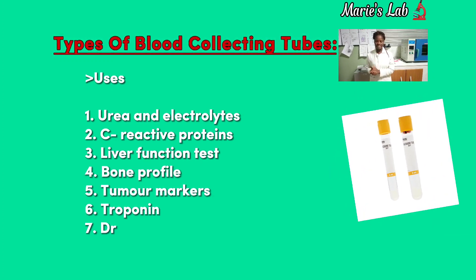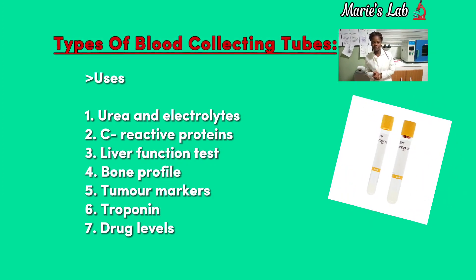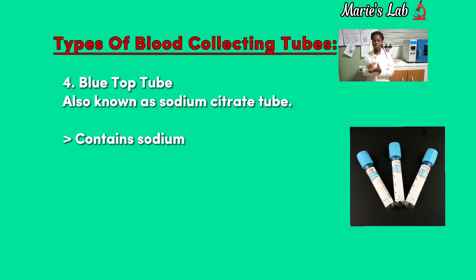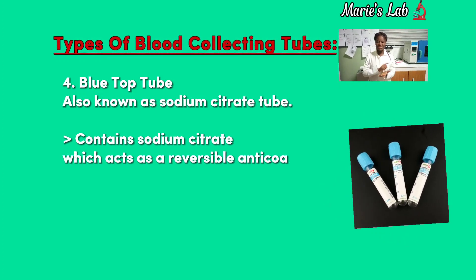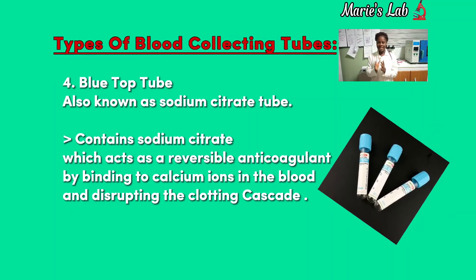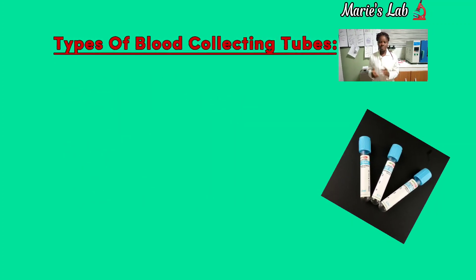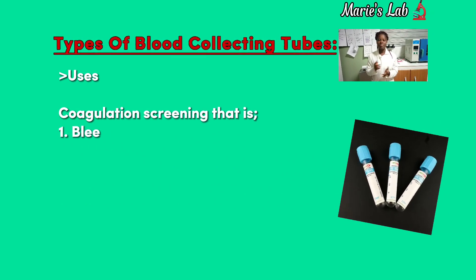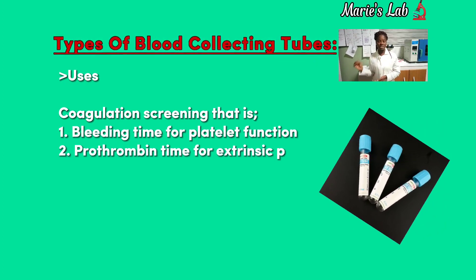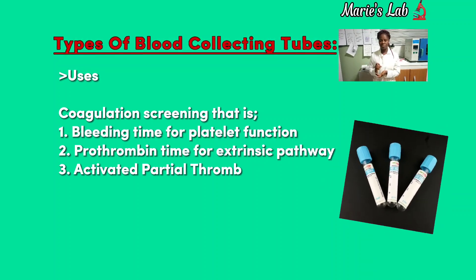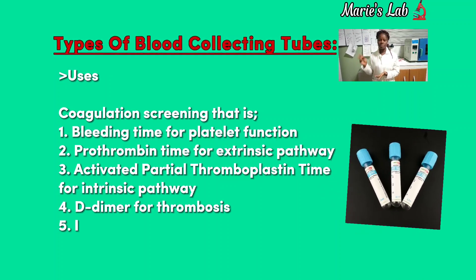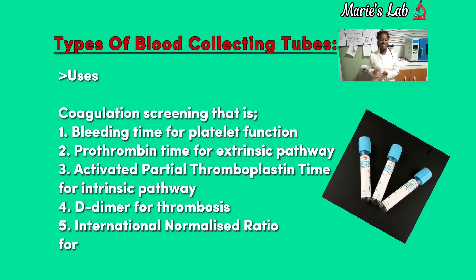Number 4: Blue top tube, also known as sodium citrate tube, contains sodium citrate which acts as a reversible anti-coagulant by binding to calcium ions in the blood and disrupting the clotting cascade. Uses of these tubes: bleeding time for platelet function, prothrombin time for the extrinsic pathway, activated partial thromboplastin time for the intrinsic pathway, fibrinogen assay for the final common pathway, D-dimer for thrombosis.